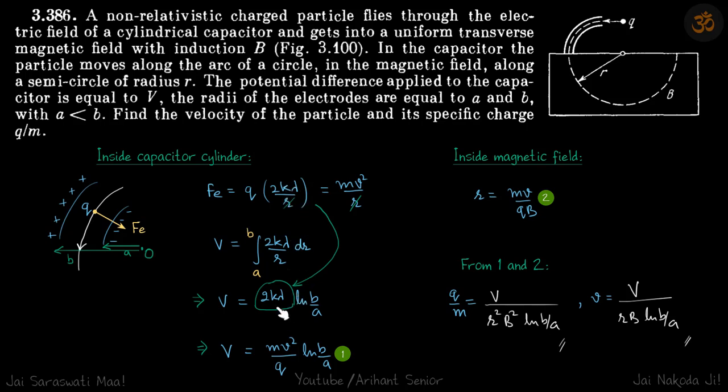If you put the value of 2k lambda here, you get V equals MV squared by Q ln B by A. So this is our first equation.